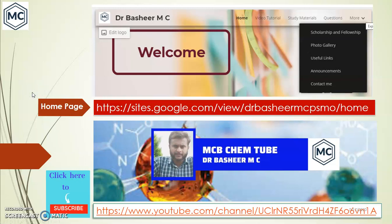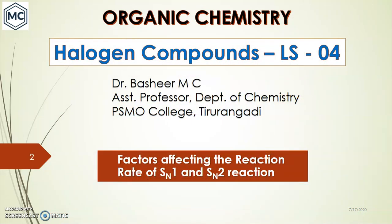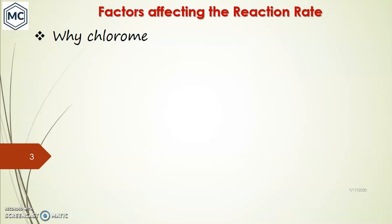Dear students, welcome back to my YouTube channel MCB Chem Tube. This is an online chemistry tutorial. We were discussing halogen compounds in organic chemistry — this is my fourth lecture on this topic. I would like to discuss the factors affecting the reaction rate of SN1 and SN2 reactions. We already discussed the mechanism of SN1 and SN2 reactions.